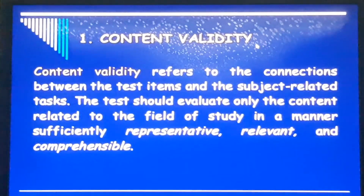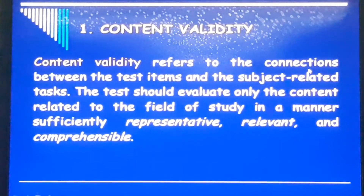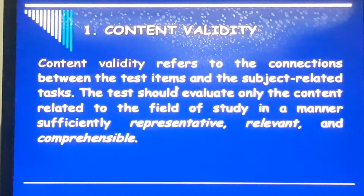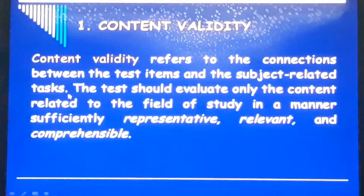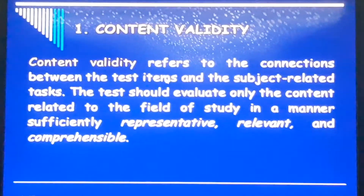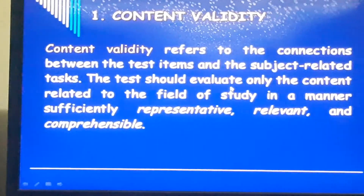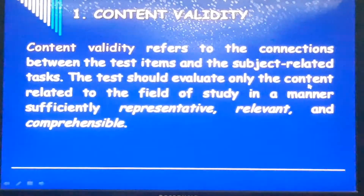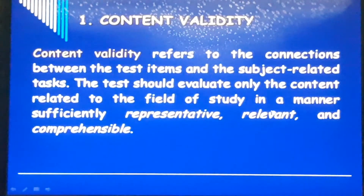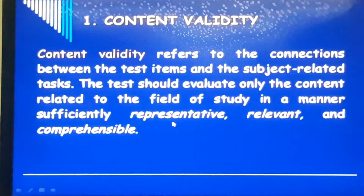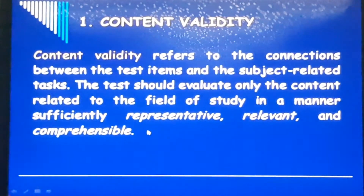The second type of validity is content validity. Content validity refers to the connections between the test items and the subject-related tasks — that is, the relationship between test items and subject-related tasks. The test should evaluate only content related to the field of study in a manner that is sufficiently representative, relevant, and comprehensive.